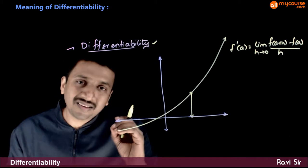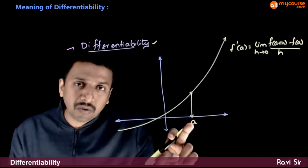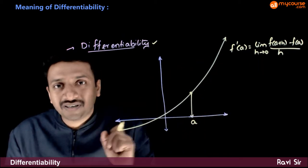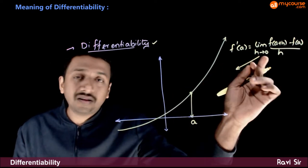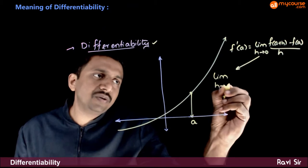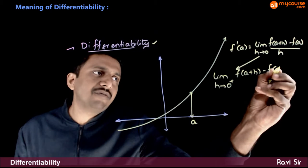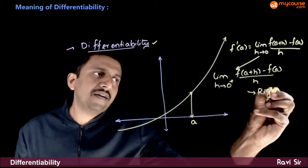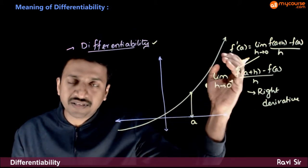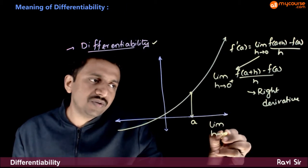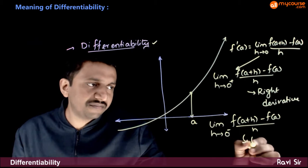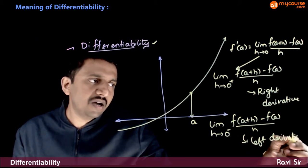Next we have something called the right differentiation and the left differentiation. The limit h tends to 0 plus of f of a plus h minus f of a by h is called the right derivative of f of x at x equal to a. Similarly, limit h tends to 0 minus of f of a plus h minus f of a by h is called the left derivative of f of x at x equal to a.